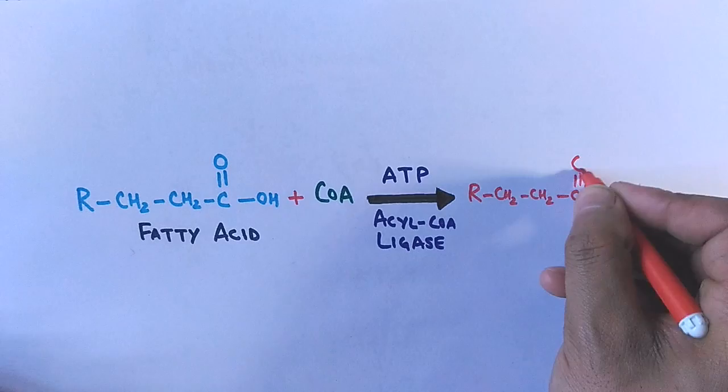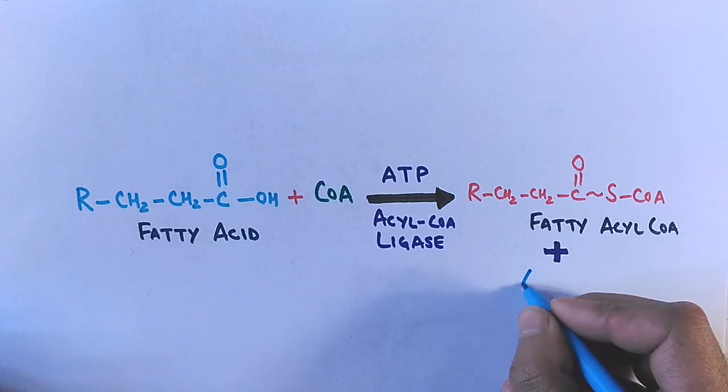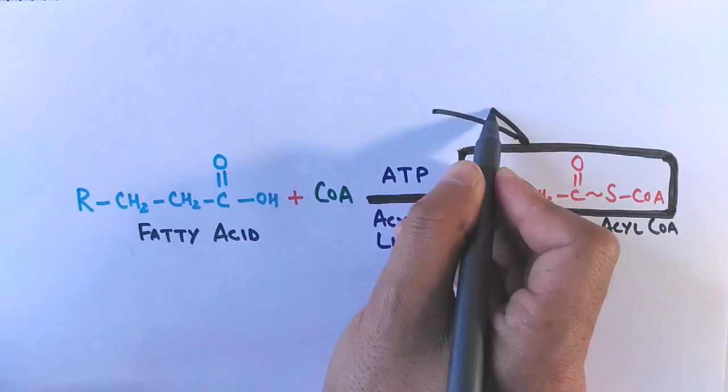And from this reaction we get fatty acyl CoA, which is called the activated fatty acid. And also we get AMP plus the inorganic pyrophosphate. And this fatty acid, that's fatty acyl CoA, is transported to matrix.